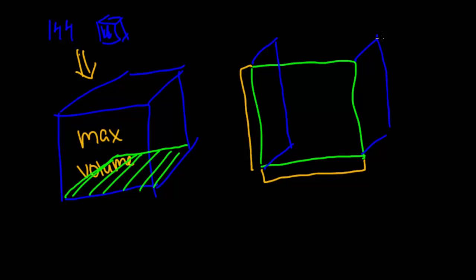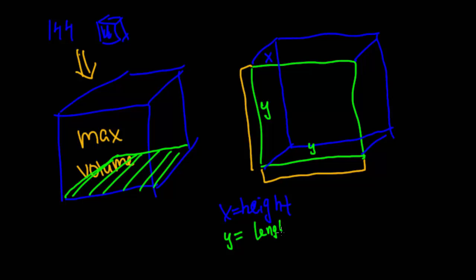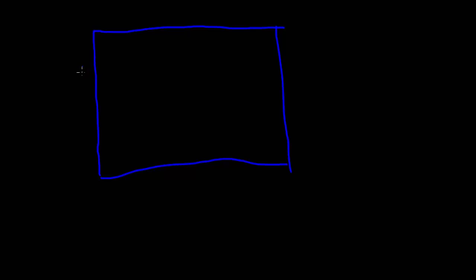So we actually have several different variables here. We have our variable x, which is going to be our height. And then we have our variable y, which is going to represent the length and the width of the house. It might not be the best to have a square base, but just for simplicity's sake, we're going to start with a square foundation. So length and width are both y, and height is x. To start our calculation, let's assume we're going to place our 144 blocks in a square shape, so 144 squares lying in square form.